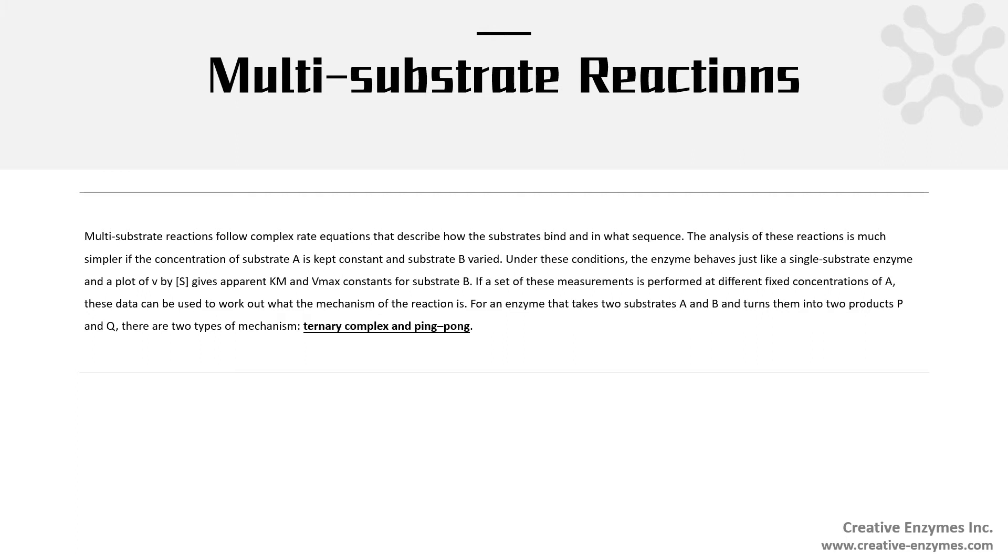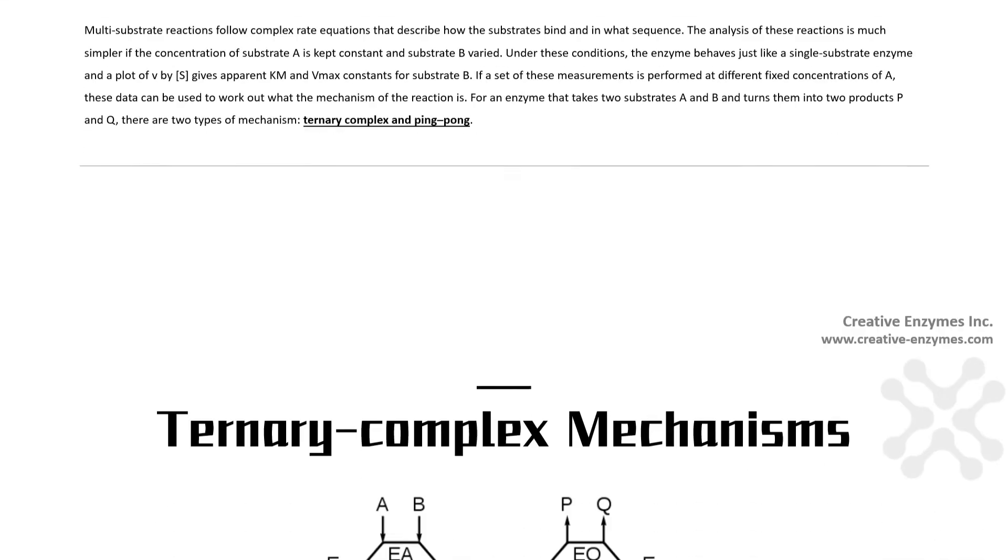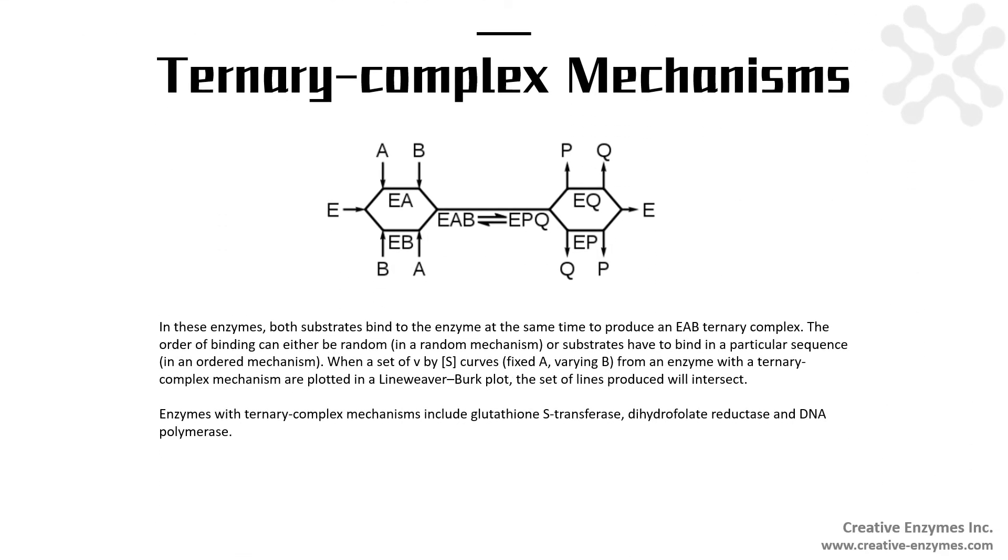For an enzyme that takes two substrates A and B and turns them into two products P and Q, there are two types of mechanisms. In these enzymes, both substrates bind to the enzyme at the same time to produce an EAB ternary complex. The order of binding can either be random, in a random mechanism, or substrates have to bind in a particular sequence, in an ordered mechanism.